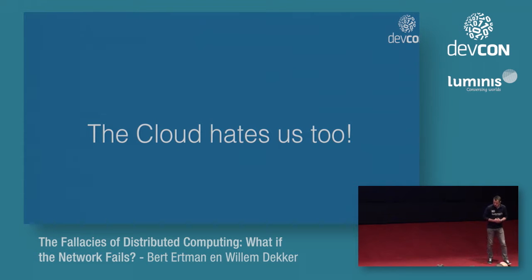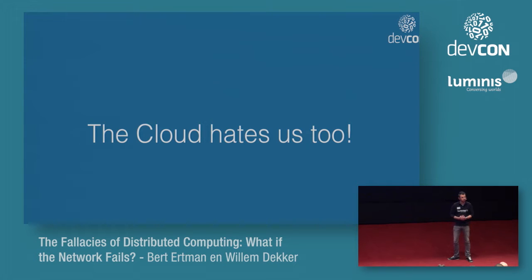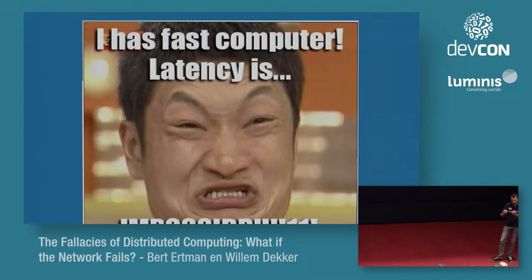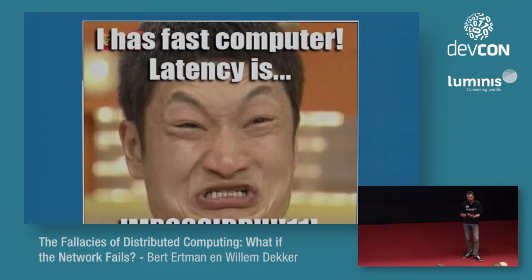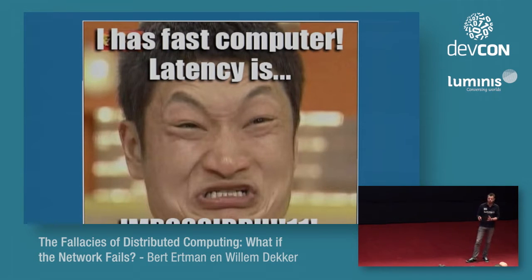In trying to translate these fallacies for developers today, what it comes down to is: the network hates us, and the cloud hates us too. We as developers tend to think in synchronous programming models — everything just connects and works on a local machine. Even with a little distribution in the mix, we assume that an easy local call will also be an easy remote call. We use simple protocols like HTTP which are human-readable, so what could possibly go wrong? Well, these assumptions work up to some point, and then at scale under load they no longer work.